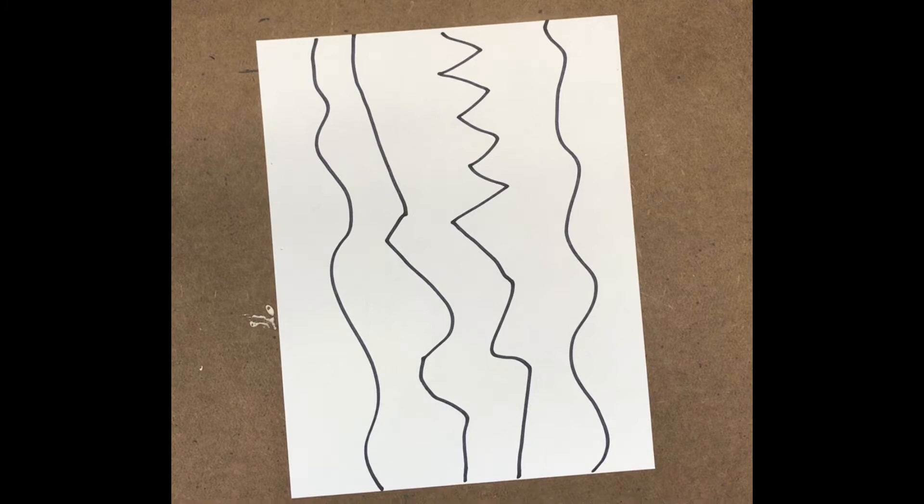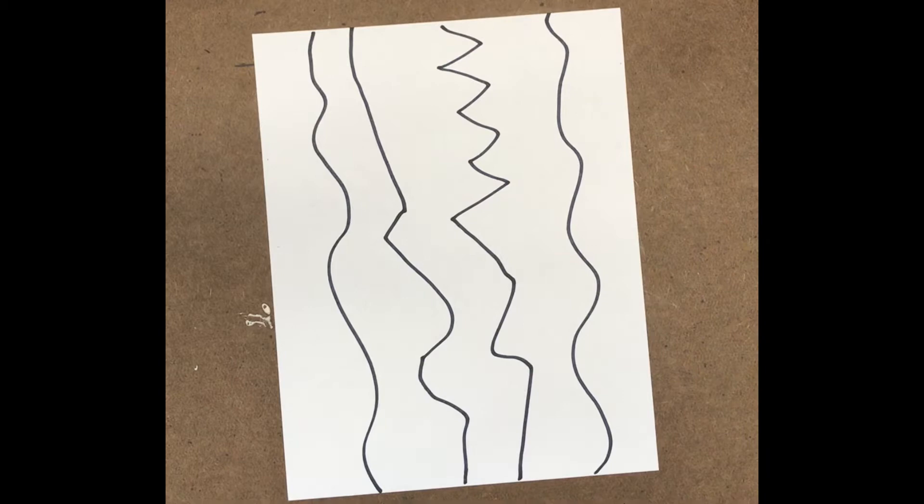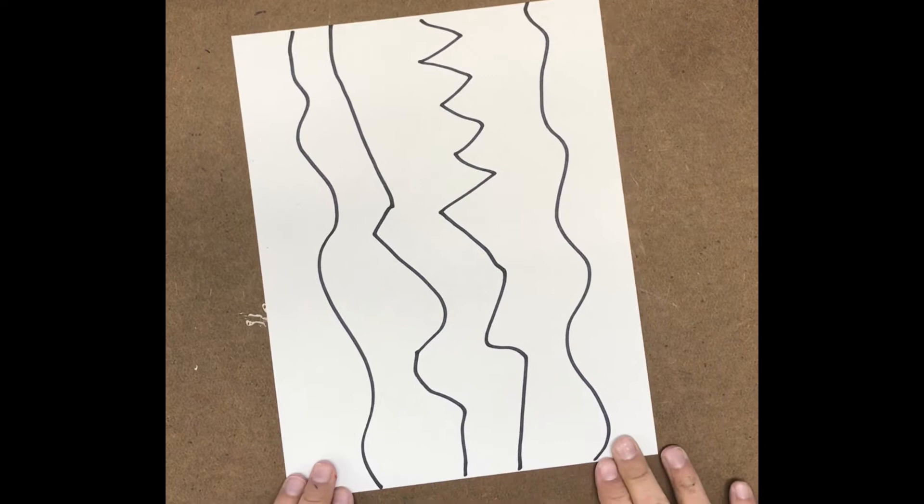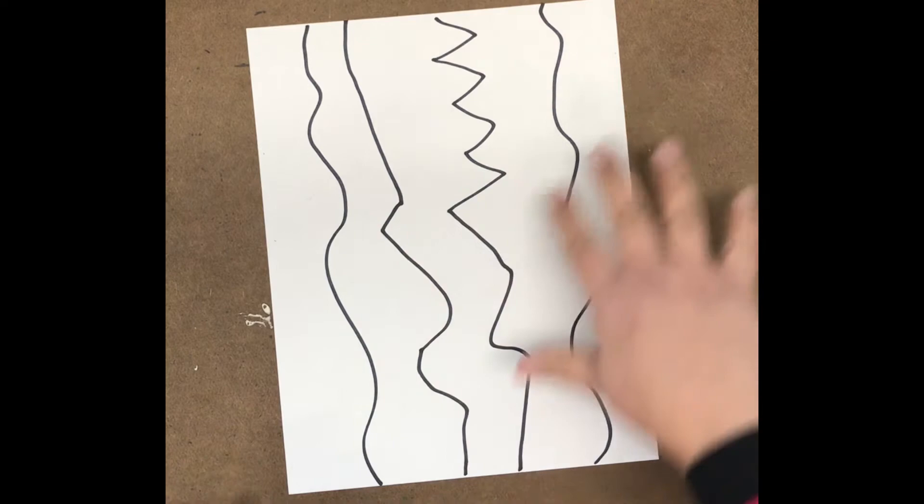Our next step is to fill each of these spaces with a different pattern. So use your black crayon or marker and make, they don't have to be complicated patterns at all, and just fill each one with a different pattern.